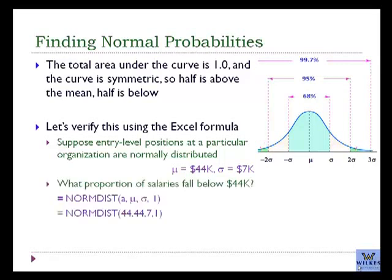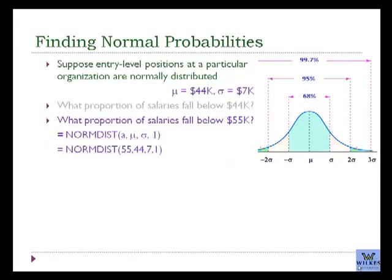What proportion of salaries fall below 44,000? Now we know 44,000 is the mean, so if we use the Excel NormDist formula, we get a probability of 0.5. We would expect half to be below. What proportion of salaries fall below 55,000? Since 55,000 is slightly above the mean, we would expect a probability higher than 50%. Using the Excel formula, we get a probability of 94%.